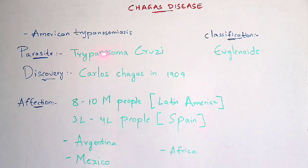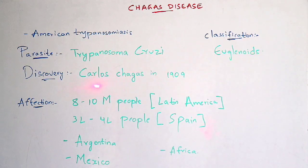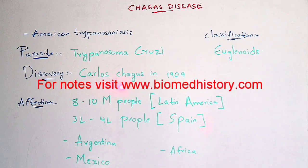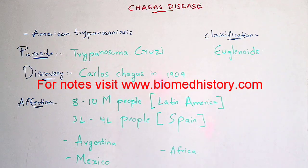Trypanosoma cruzi comes under the classification of Euglenoids. Coming to the discovery, Carlos Chagas is the scientist who first identified the structure of Trypanosoma cruzi in 1909.